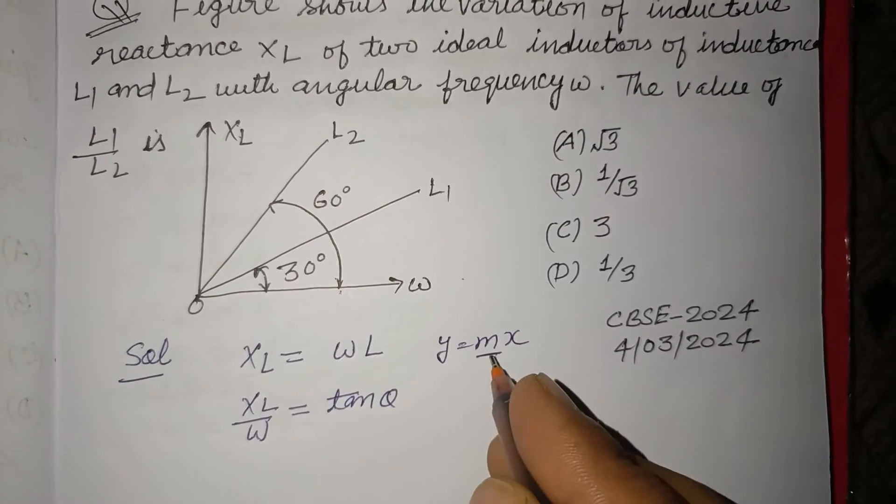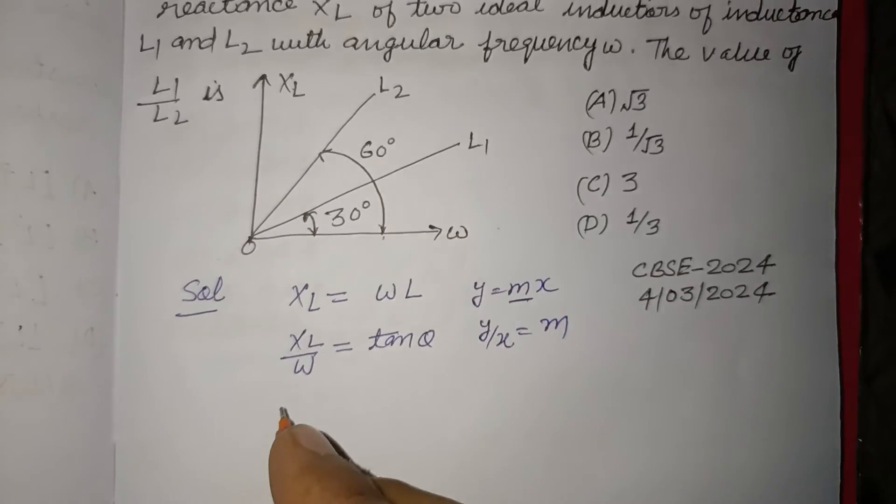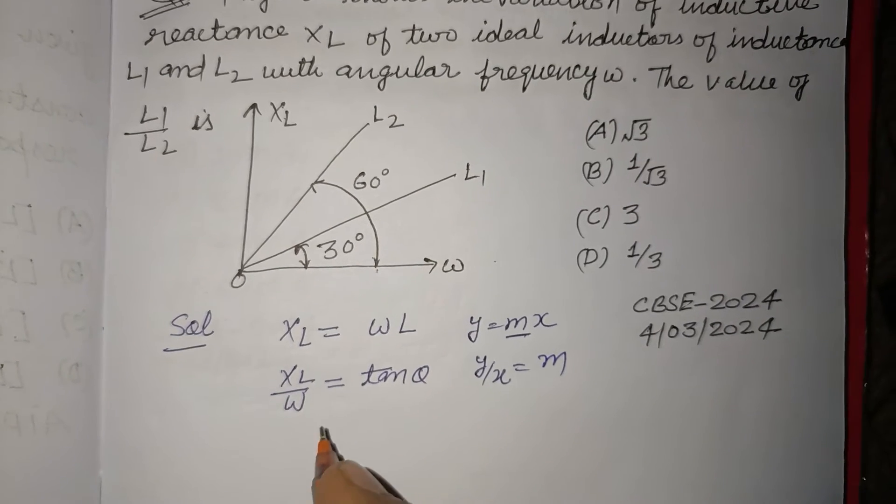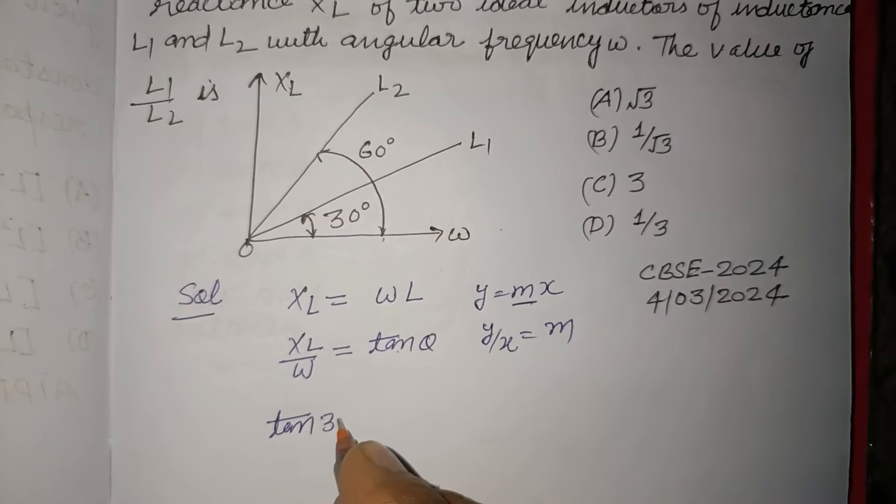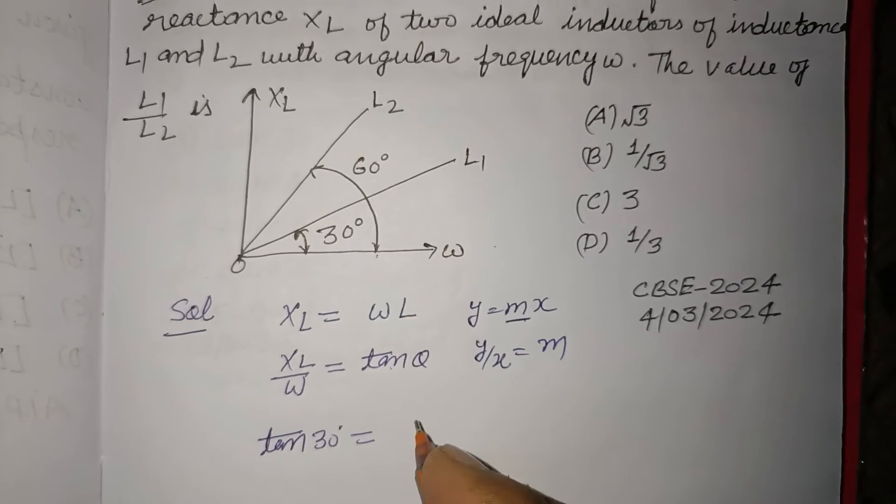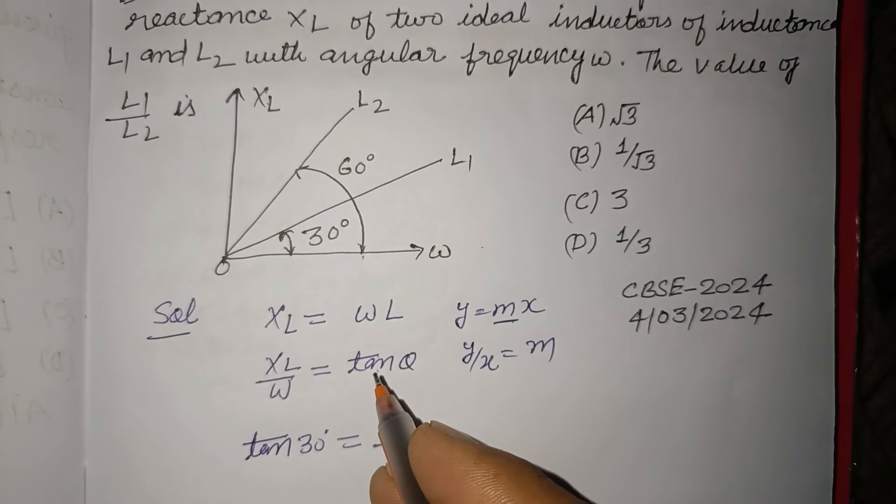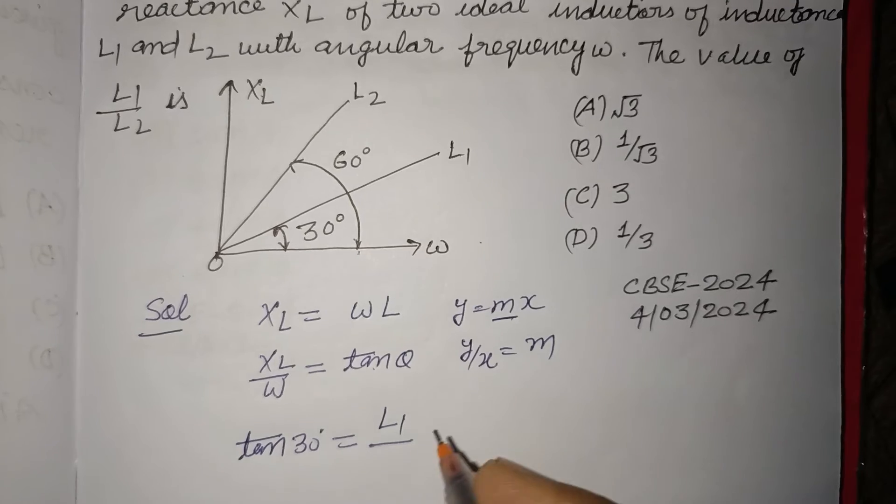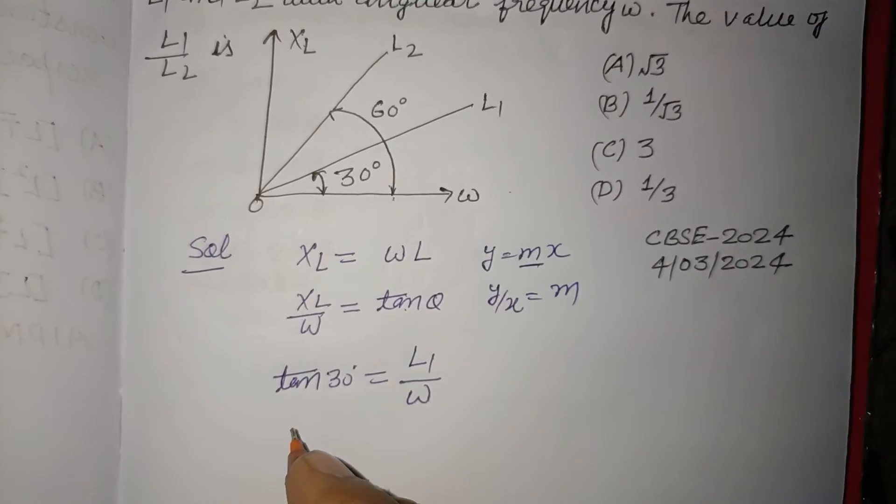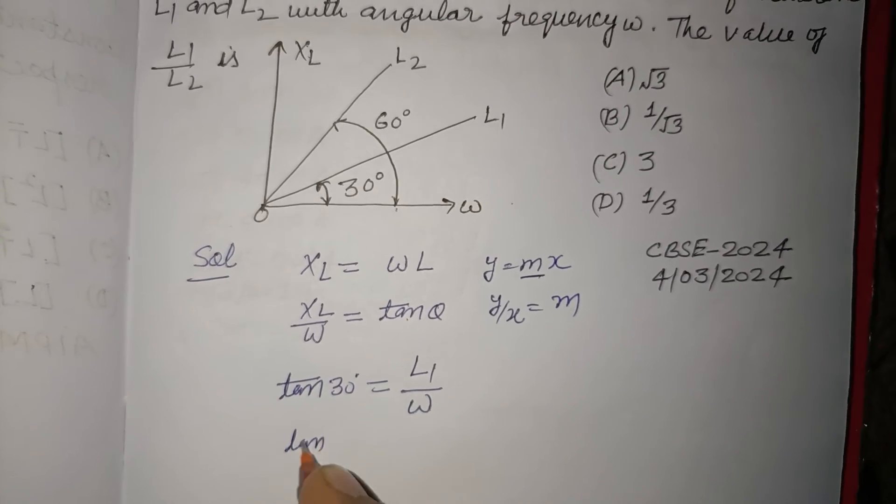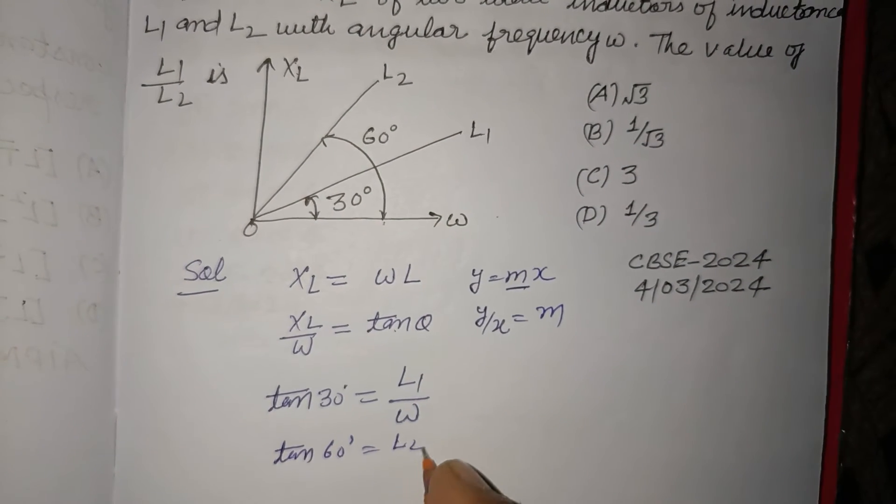In the first case, tan 30° equals L1 over ω. And tan 60° equals L2 over ω. So this is our first equation and this is our second equation.